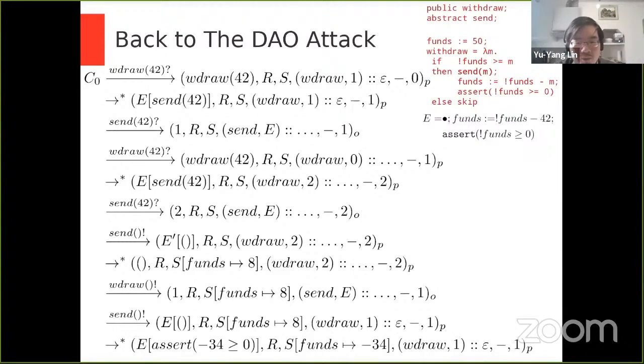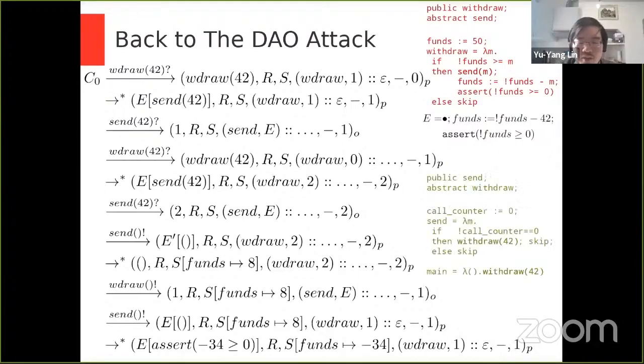So in this case, the opponent decides to call to re-enter the function, and again, the proponent is able to evaluate. Once again, it has to pass control to the opponent because it doesn't have the code to execute. And at this point, the opponent then decides that it has had enough, and just decides to return. With this, the proponent is able to evaluate all the way down to a value, which you can then return to the opponent. In this case, it's just unit, because the last thing to execute was an assertion, which is a command. And then the opponent decides again to just return to the proponent, which finally leads to the proponent being able to evaluate all the way down to an assertion, which in this case it has to prove that negative 34 is greater or equal than 0, which is obviously not the case.